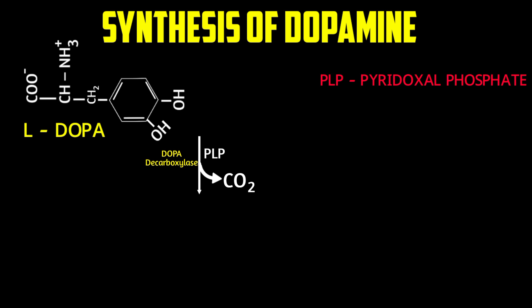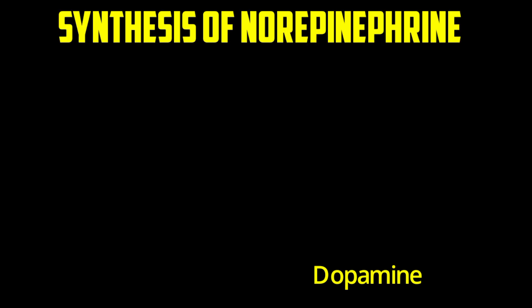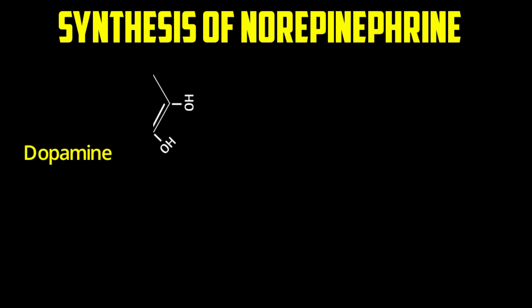This decarboxylation reaction, like many amino acid decarboxylation reactions, requires pyridoxal phosphate (PLP) as a cofactor. Dopaminergic neurons stop synthesis at this point because they do not synthesize the enzymes required for subsequent steps. The difference between DOPA and dopamine is simply the removal of CO2.